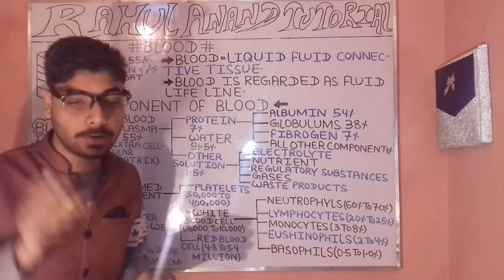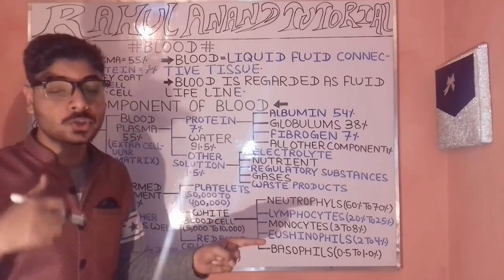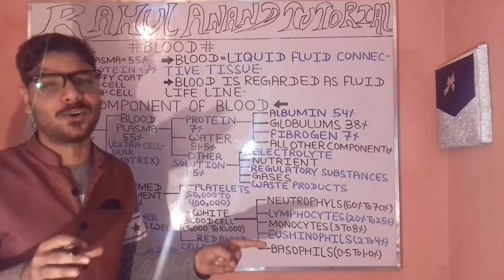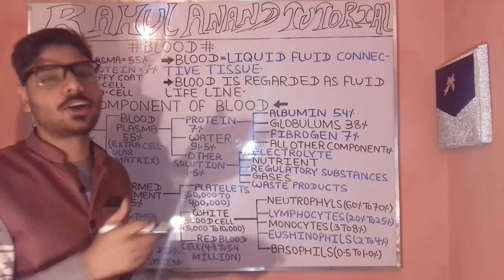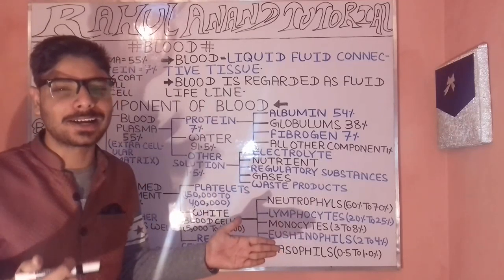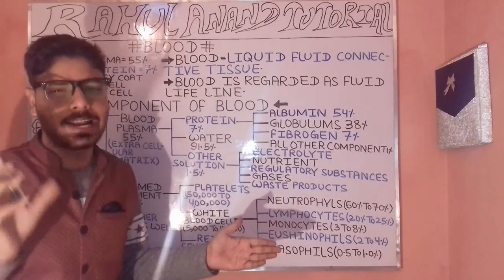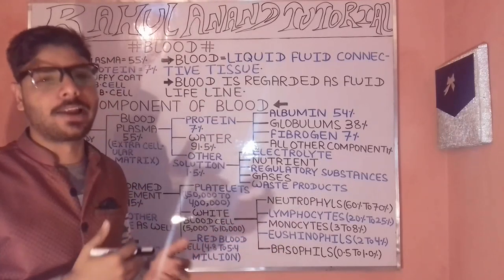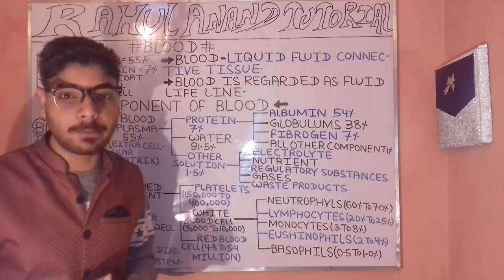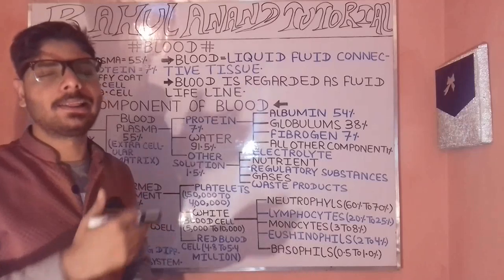Smooth tissue is literally found with reference to the genital organs and lip tissue. Blood is regarded as the fluid lifeline, and water is the lifeline playing an important role to maintain life.